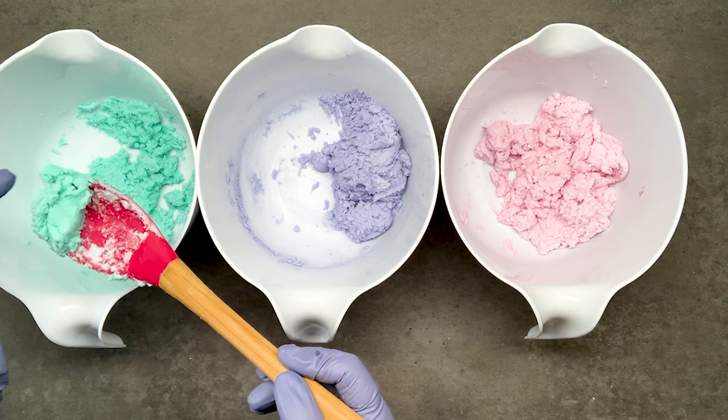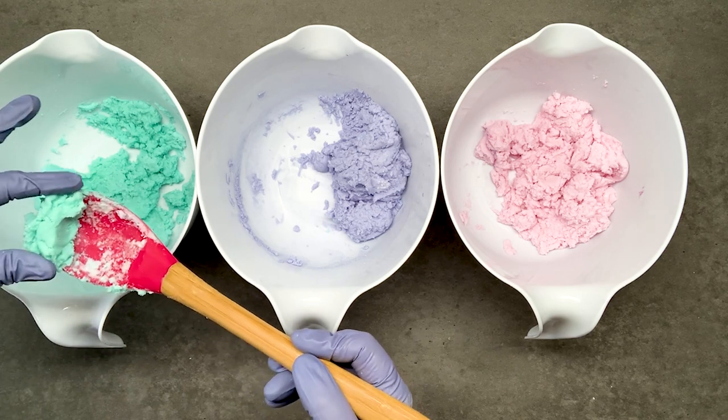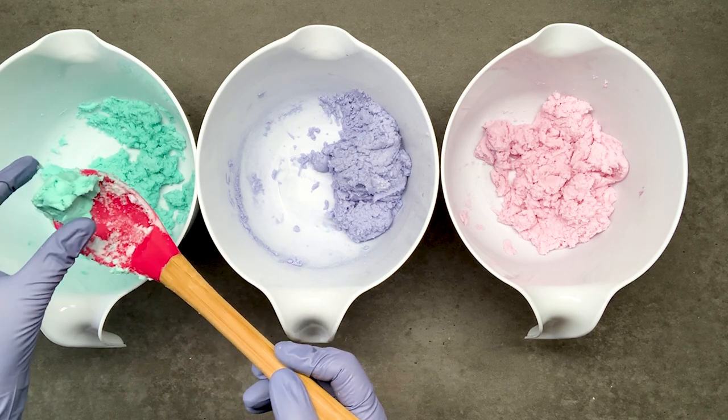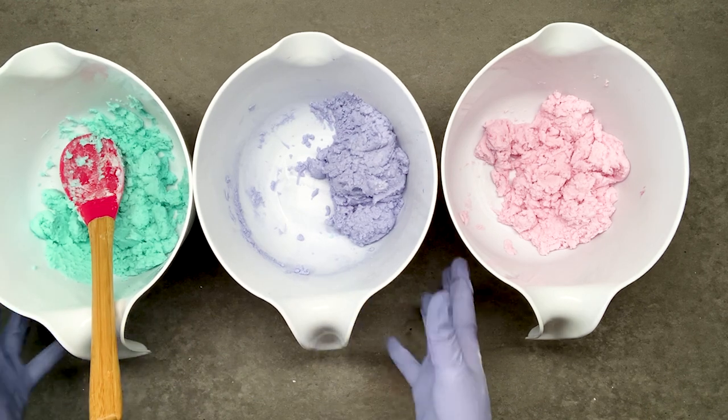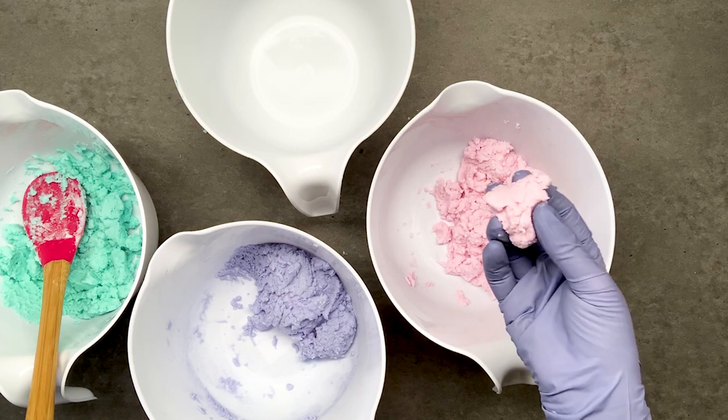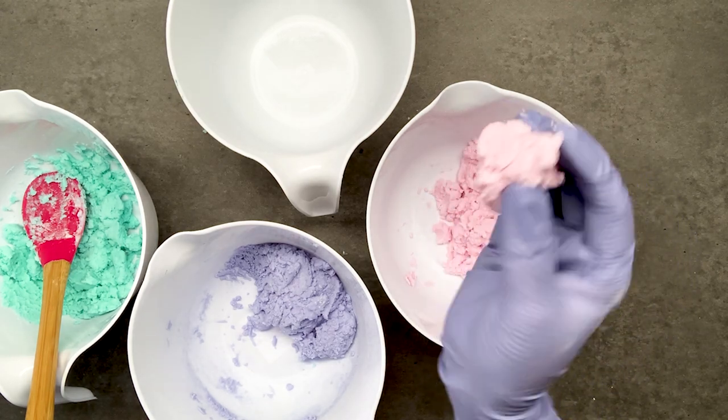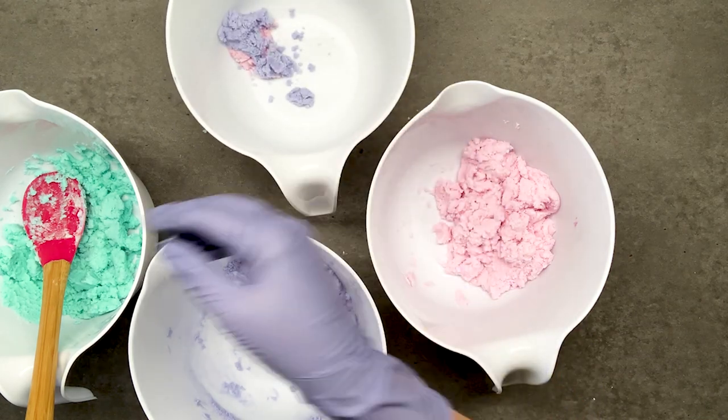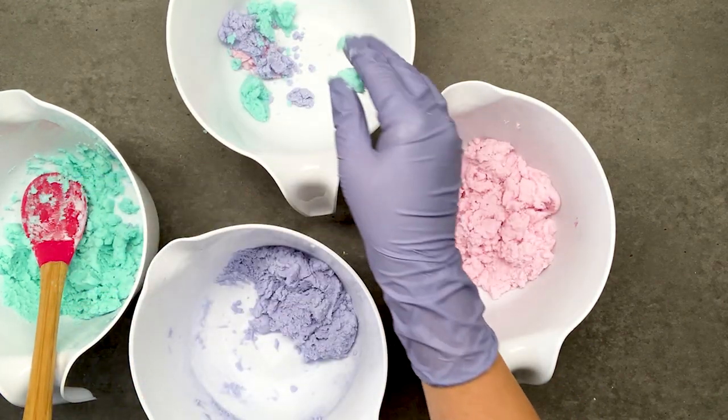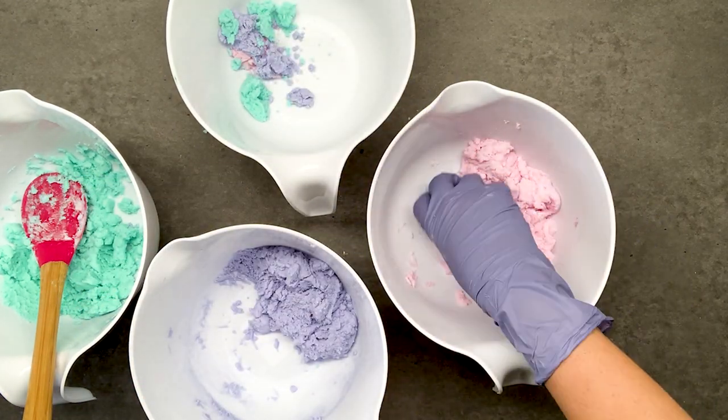The consistency that you're looking for is kind of like a raw cookie dough. To get the marble effect that I have with my bubble scoops, all you have to do is take little chunks of each color and I just throw them in on top of each other until I have a good mix.